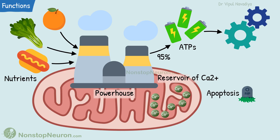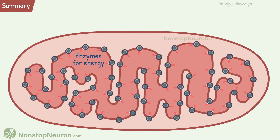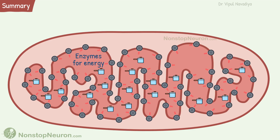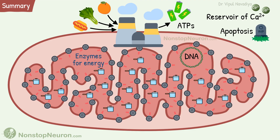So that was all about mitochondria. Let's have a quick summary. Mitochondria are made up of a double membrane. The inner membrane is folded and contains oxidative enzymes. The matrix contains more enzymes involved in energy metabolism and mitochondrial DNA. The mitochondria produce most of the ATPs required by the cell. They also serve as a reservoir of calcium and participate in apoptosis.